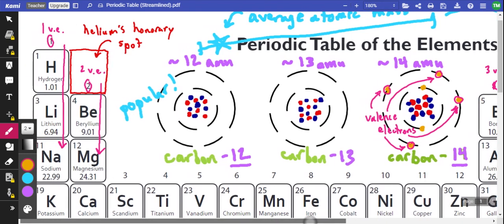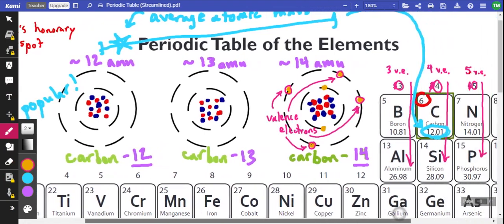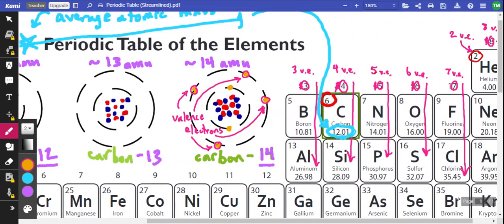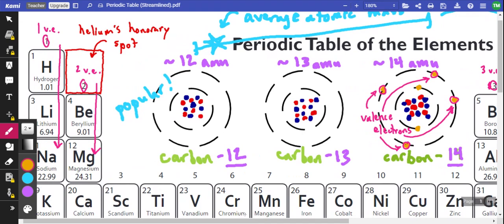So focus on columns one and two being one valence electron and two valence electrons. Skip columns three through 12, and pick up with 13 being three, 14 being four, 15 being five, 16 being six, 17 being seven, and 18 being eight, except for helium, which has two on the other side. So that's valence electrons.